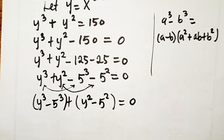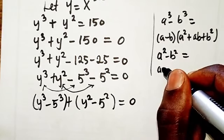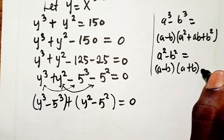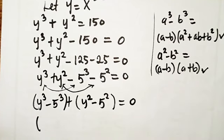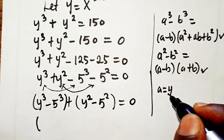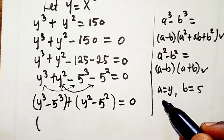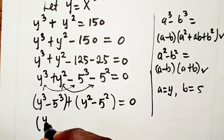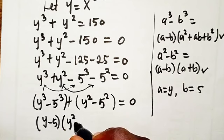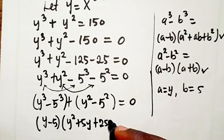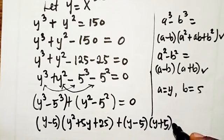Also recall that a squared minus b squared equals (a minus b)(a plus b). We will apply both identities here. With a equals y and b equals 5, the first group gives us (y minus 5)(y squared plus 5y plus 25), and the second group gives us (y minus 5)(y plus 5).